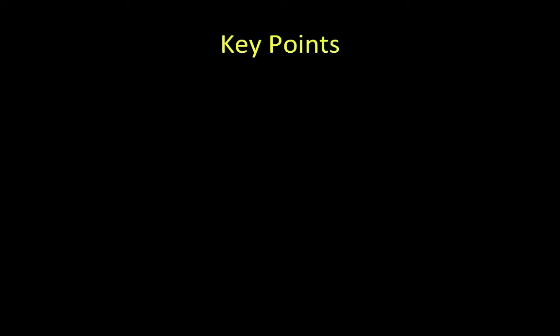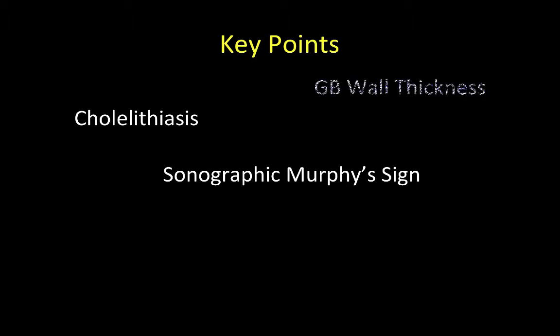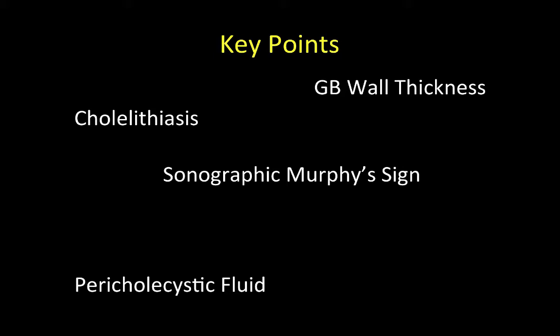The most important positive findings sought when performing point of care gallbladder and biliary ultrasound are cholelithiasis, sonographic Murphy sign, gallbladder wall thickening, pericolecystic fluid, and common bile duct dilation. Common bile duct dilation is technically the most difficult and time-consuming part of the exam to complete, and its utility has been called into question recently.